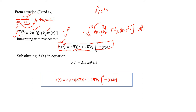Now that we have θᵢ(t) for frequency modulation, we substitute it into the general equation s(t) = Ac·cos(θᵢ(t)). This gives the time domain representation of the FM signal: s(t) = Ac·cos(2π·fc·t + 2π·kf·∫₀ᵗ m(t)dt).